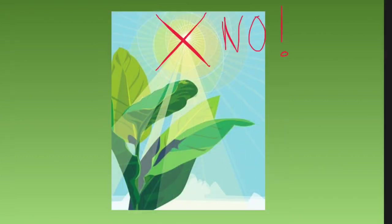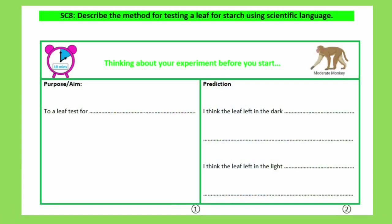You have to write a prediction as to whether each leaf will or won't have starch. You should now be able to fill out both parts of this green box. Please do not move on until you have filled out the green box entirely because we will be marking it next.